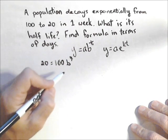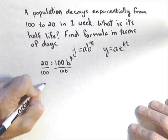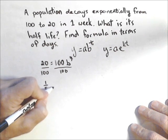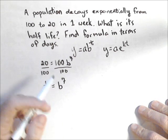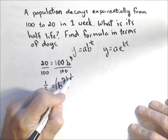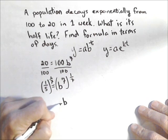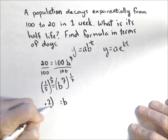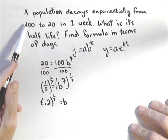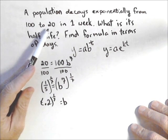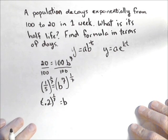So basically I solve this for B. I divide both sides by 100, and I get one-fifth, or 0.2. So one-fifth equals B to the seventh. I don't need logs to solve this equation because I know the exponent — you only want to use logs when the unknown is in the exponent. So I take both sides to the one-seventh, and I get B equals 0.2 to the one-seventh. It's going from 100 to 20, so there's 20% left in seven days. That gives us our base, and we can actually make the model now.